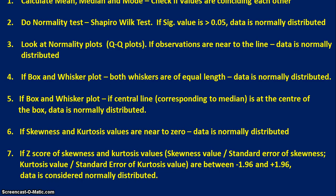There are many ways to know if the data is normally distributed or not. The first and simplest method calculates mean, median, and mode and checks if those values are coinciding with each other. The second, more advanced and most commonly practiced method is the normality test using the Shapiro-Wilk test.